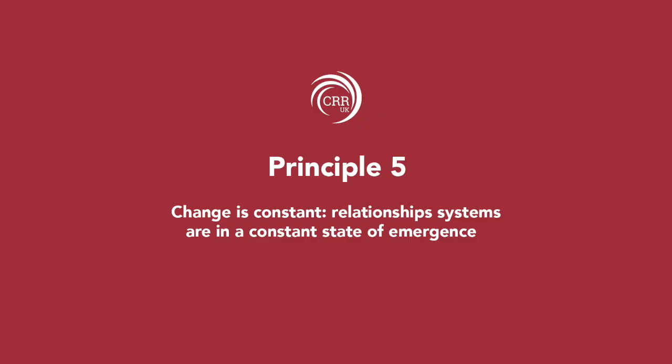And how does all of this help us navigate change? Principle number five: change is constant. Relationship systems are in a constant state of emergence. The final principle is to recognize that relationship systems are in a constant state of emergence. The premise is to accept that change is constant, natural, and inevitable. Sometimes change comes from the outside, other times from within. Most people are averse to change because of the uncertainty it brings and the fear of the unknown.